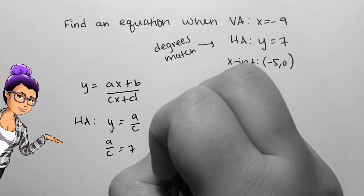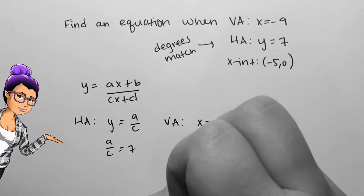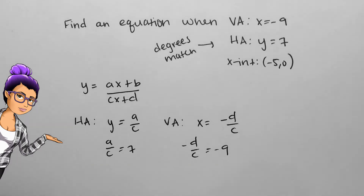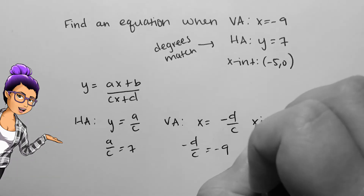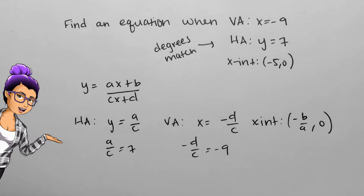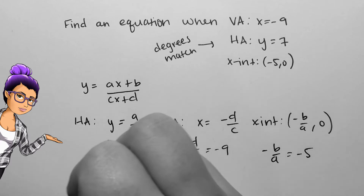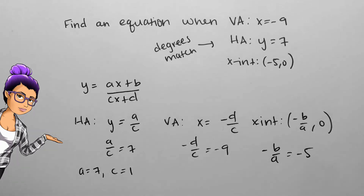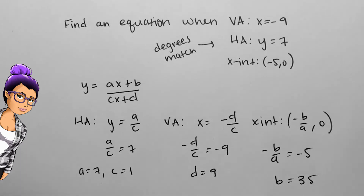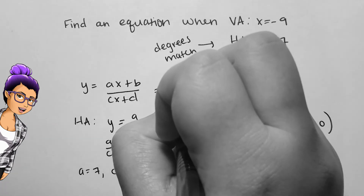That means that a over c simplifies down to 7, negative d over c simplifies down to negative 9, and negative b over a simplifies down to negative 5. Since there are infinitely many correct equations, let's make a choice — this will make the rest of our problem easier. Say that a is 7 and c is 1. If there are any fractions as coefficients within our rational later in the problem, we'll need to fix them, but we'll worry about that in the end. If c is 1, then d is 9. If a is 7, then b is 35. Putting everything together, I get that y is 7x plus 35 over x plus 9.